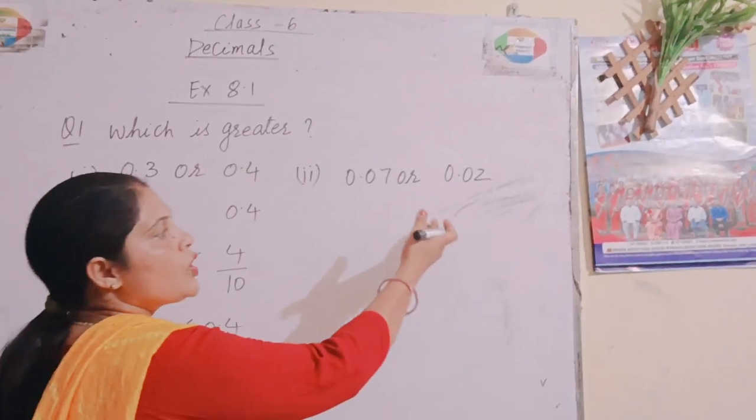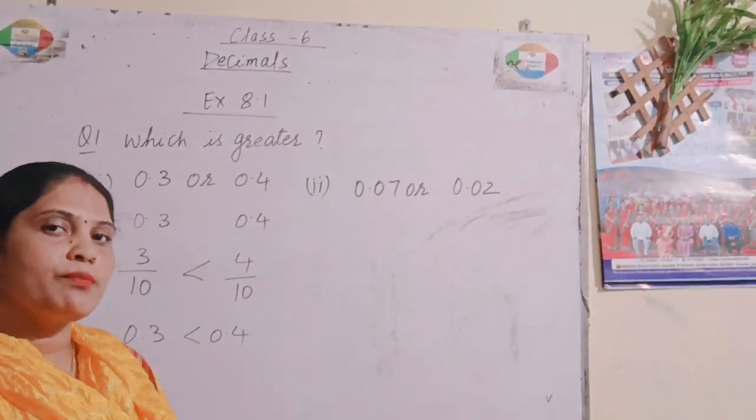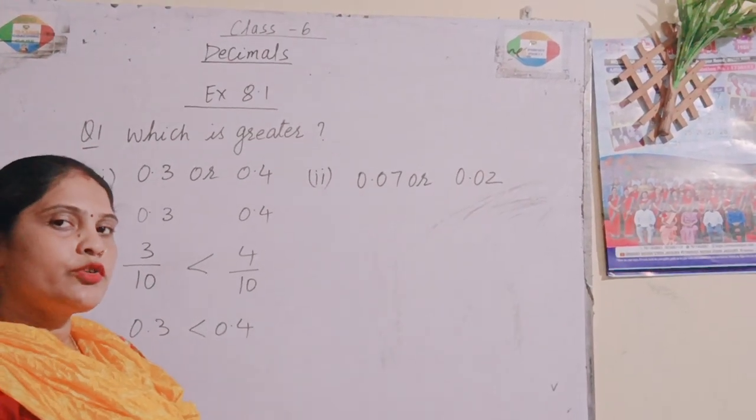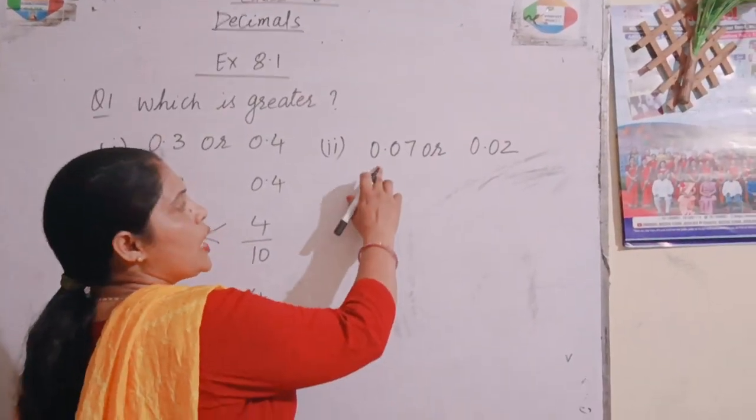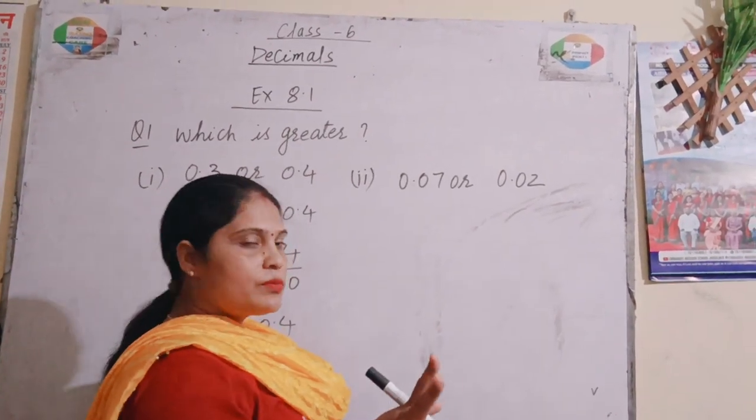0.07 or 0.02. Again we will follow the same pattern. First we will convert into fraction. So how many numbers are there after the decimal? Yes. Very good. 2 numbers are there.